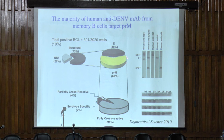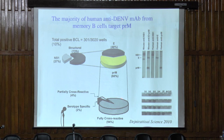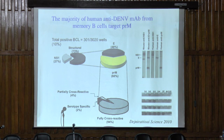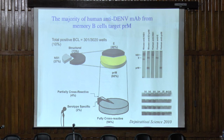We were quite surprised that the majority of antibodies we generated were actually against the precursor membrane protein. And those antibodies were highly cross-reactive amongst the dengue virus serotypes, more so indeed than the envelope protein antibodies. So we had to concentrate on the precursor membrane protein antibodies to see what they were doing in dengue infection.